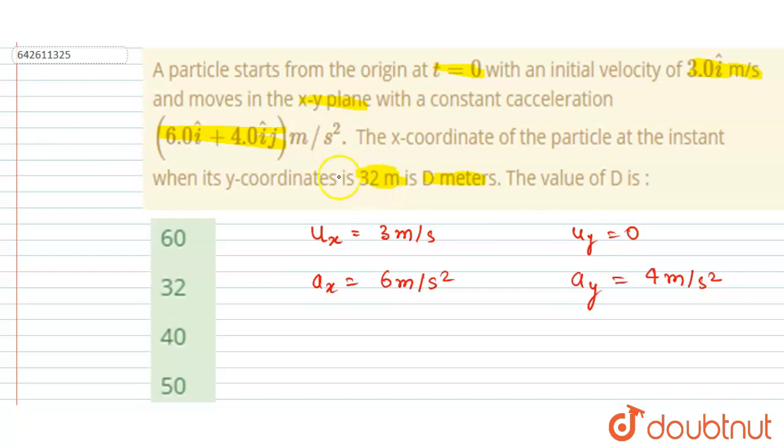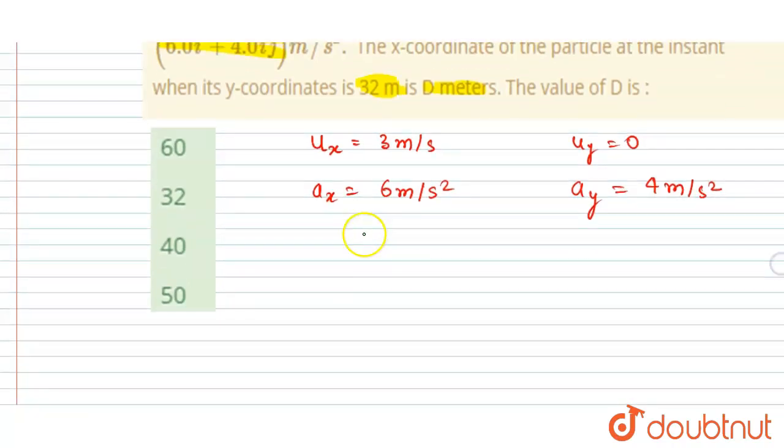So it is asked that when the y-coordinate is 32, you have to find out the x-coordinate of the particle. So let's find out the time when the y-coordinate of the particle will be equals to 32. So I will write the second equation of motion in y direction.